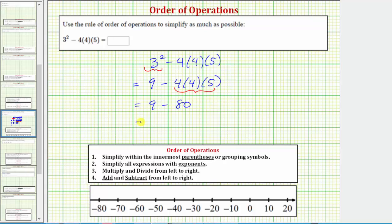And we have one operation left. Nine minus eighty is equal to negative seventy-one, which means the given expression simplifies to negative seventy-one or has a value of negative seventy-one.